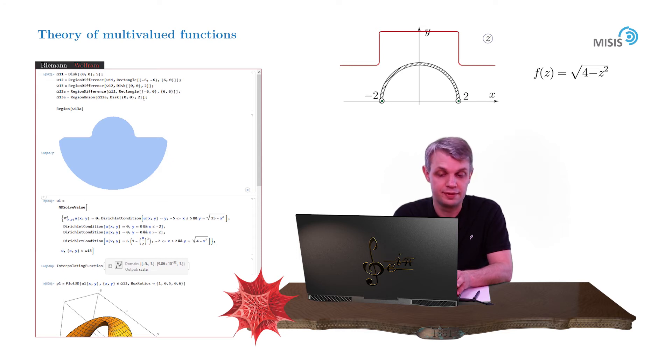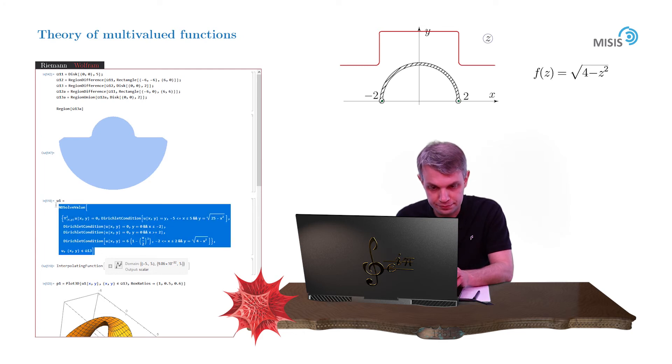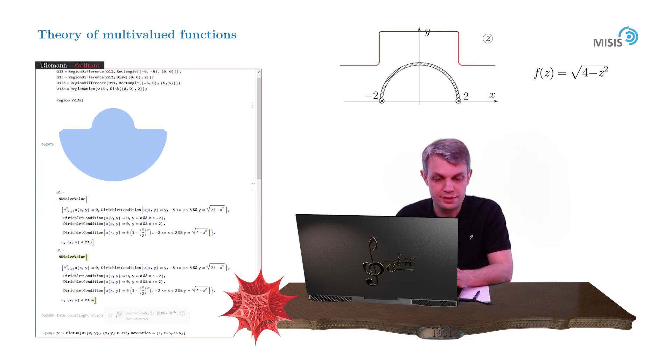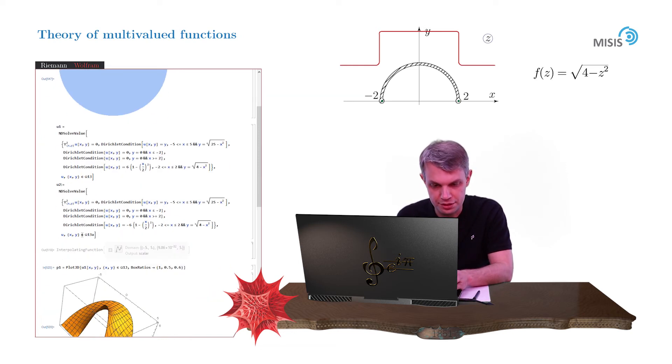Now time has come to find the function for our second half of the Riemann sheet. So let's call it U2. And the only difference is now we have a different domain. The boundary condition at the outer edge is the same because it's the same inclination. But the boundary condition at the branch cut is different because it's bent downwards. So we change 6 to minus 6 here. Alright, so here is our function U2.